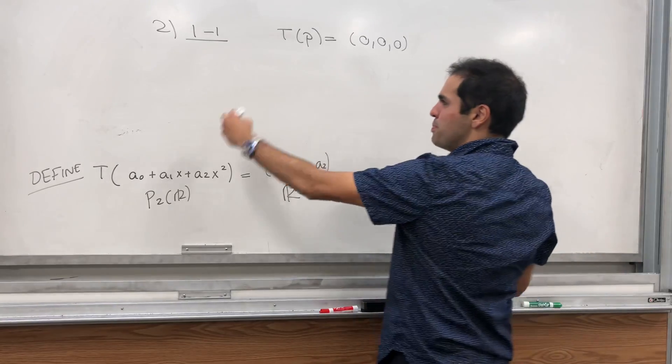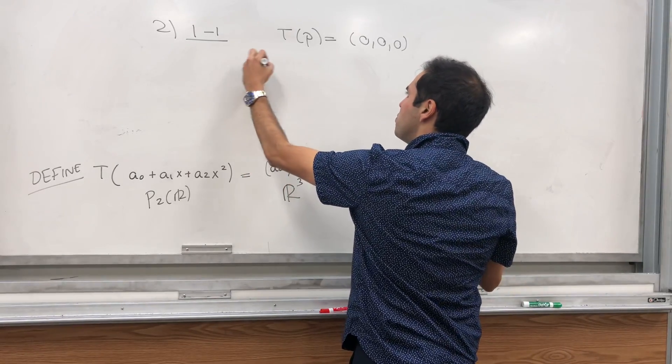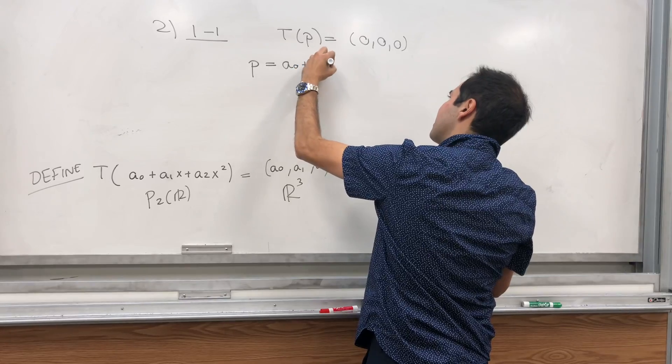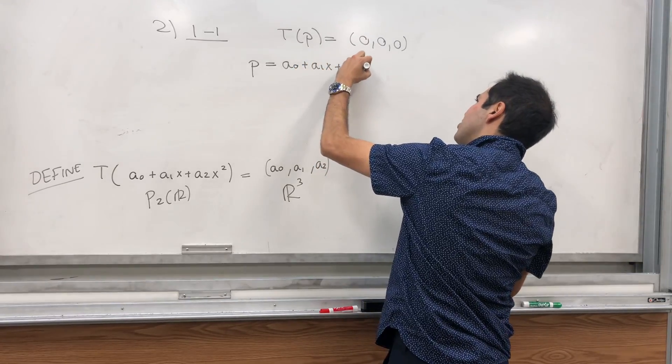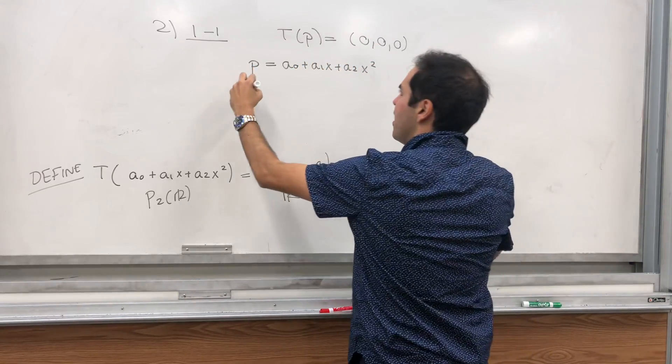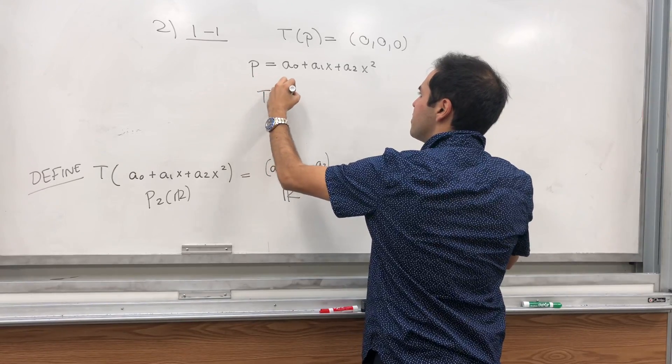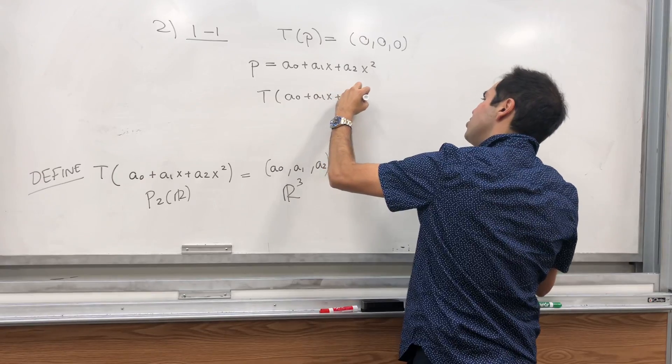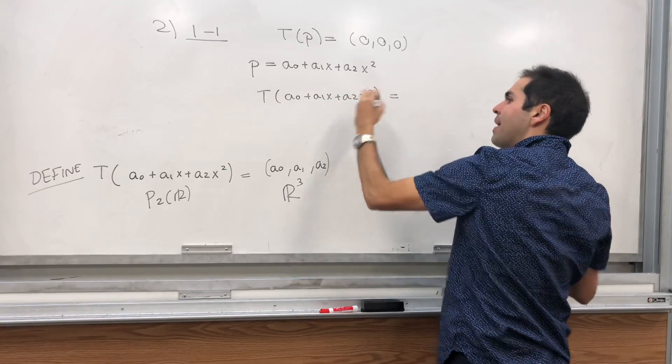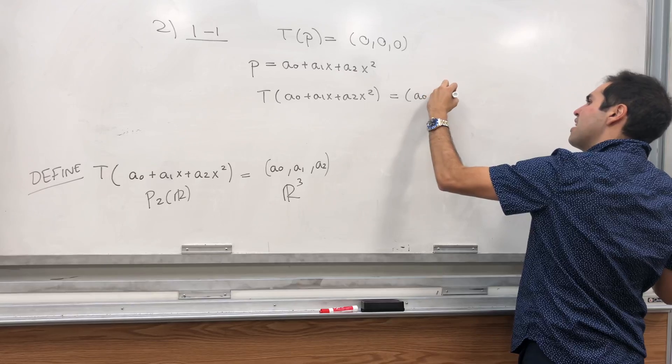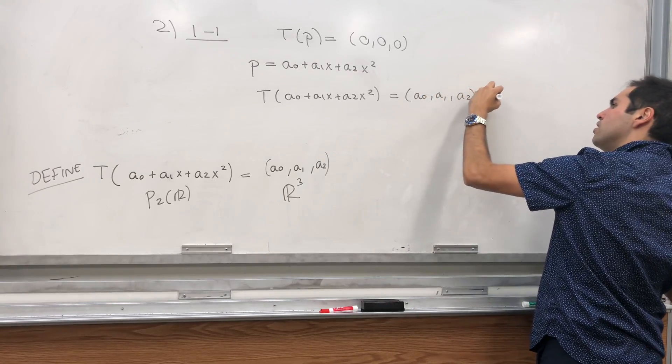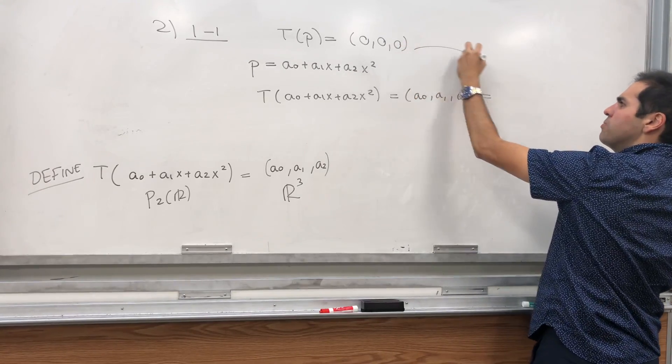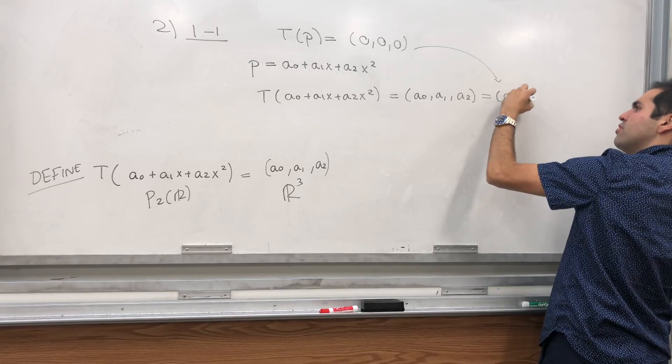Now, if P is in P2, P is a0 plus a1x plus a2x squared, then T of P is T of (a0 plus a1x plus a2x squared). By definition, that is (a0, a1, a2). But remember our assumption, we assume this is the 0 vector.